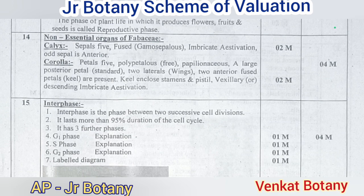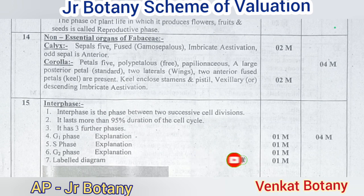Question number 15: though redundantly described as a resting phase, interphase does not really involve rest — comment. Interphase accounts for more than 95% of the cell cycle and has three further phases: G1, S, and G2. G1 is one mark, the S phase is one mark, G2 is one mark, and the labelled diagram is one mark — totalling four marks.